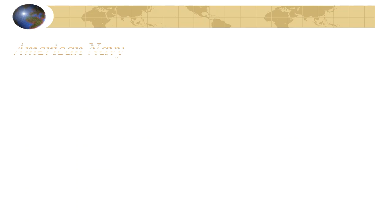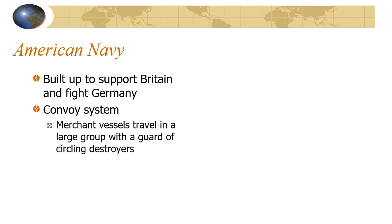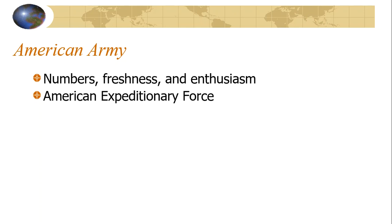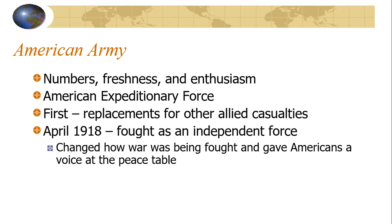The American Navy was built up to support Britain and fight Germany. One key strategy was the convoy system, where merchant vessels traveled in large groups with a guard of circling destroyers. They also set up a mine barrier and submarine chasers to defeat the German Navy. The American Army provided numbers, freshness, and enthusiasm — they were called the American Expeditionary Force. At first they filled in for Allied casualties, but in April 1918 they began to fight as an independent force. This changed how the war was fought and gave Americans a voice at the peace table.